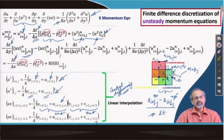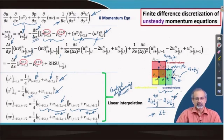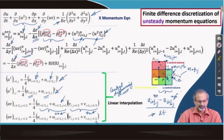This approach is very similar to what we have done even in finite volume, and you can see the close correspondence between finite volume and finite difference on a regular, uniformly spaced mesh — they actually reduce to the same form.